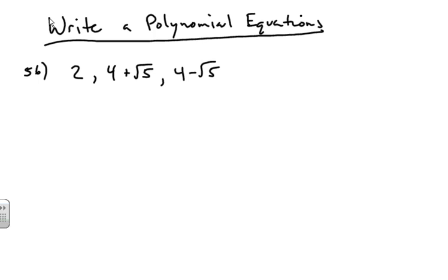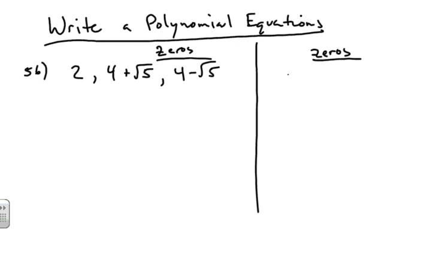There are also easier ones. Let's say we have a polynomial that has zeros: x equals negative 2, 4, and 7. We'll do the easy one first — finding a polynomial given those zeros. But first, if you don't know the Linear Factorization Theorem, let me explain it.